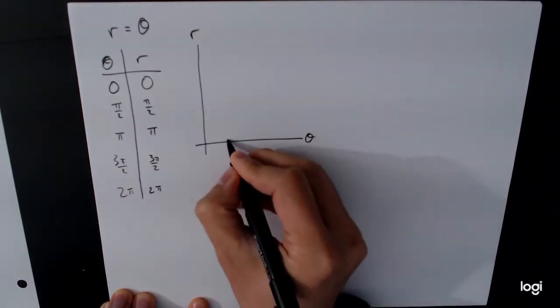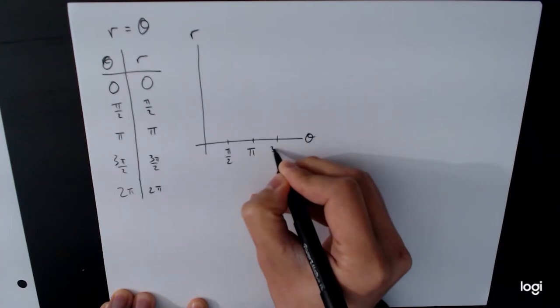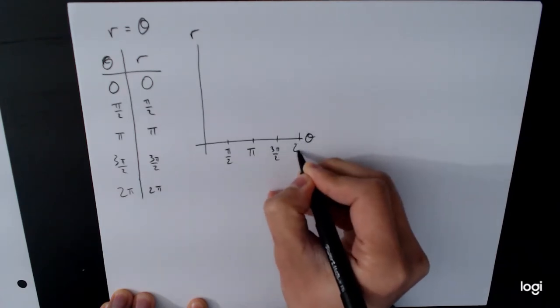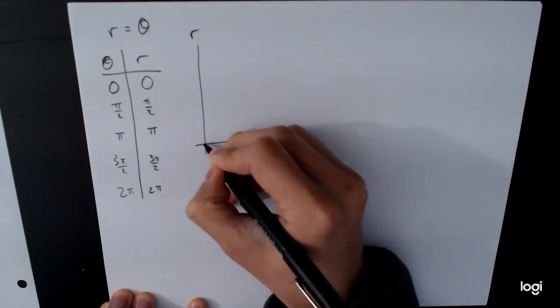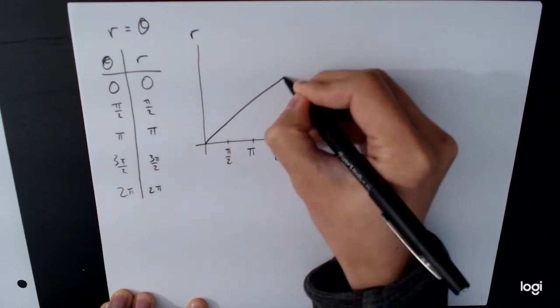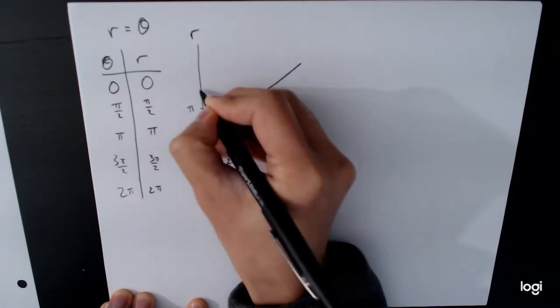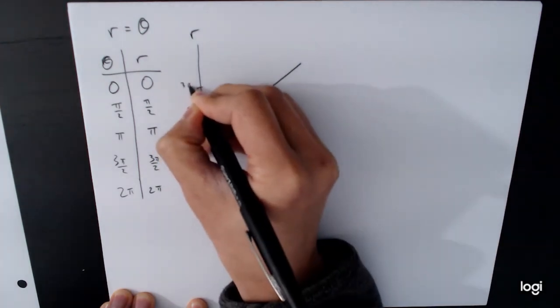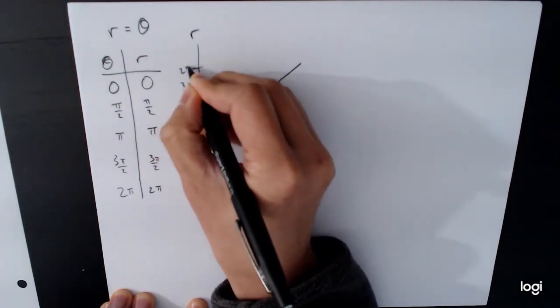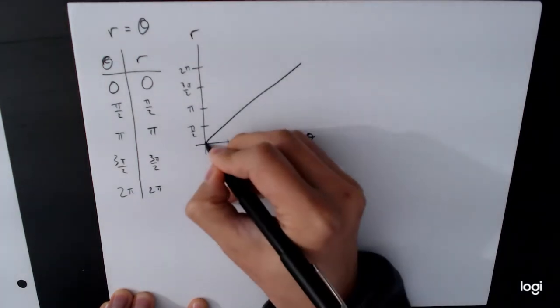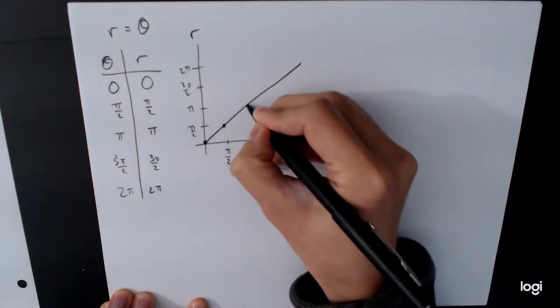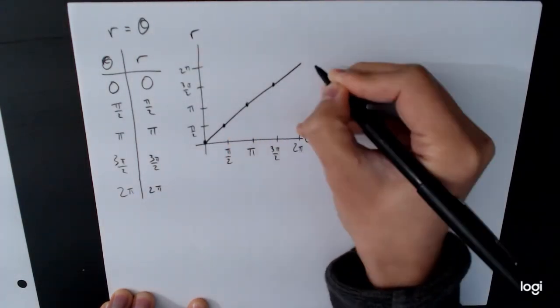And if we plot this on a graph, let's say this is π over 2, π, 3π over 2, 2π. What we're going to end up getting is a line that looks like this. So π over 2, π, 3π over 2, 2π. So this is the easy part. This is the first part. It's just getting this graph.